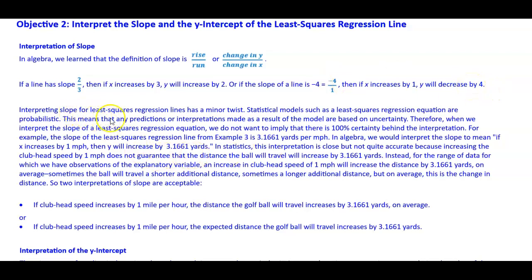Interpreting slope for least squares regression lines has a minor twist. Statistical models such as a least squares regression equation are probabilistic. This means that any predictions or interpretations made as a result of the model are based on uncertainty. Therefore, when we interpret the slope of a least squares regression equation, we do not want to imply that there is 100% certainty behind the interpretation.